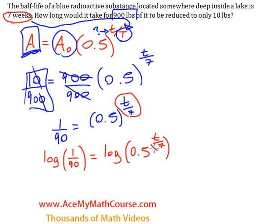One of the logarithm rules lets us bring this down, multiplying t over seven by the log of 0.5. The other side stays the same. We get t over seven times the log of 0.5.